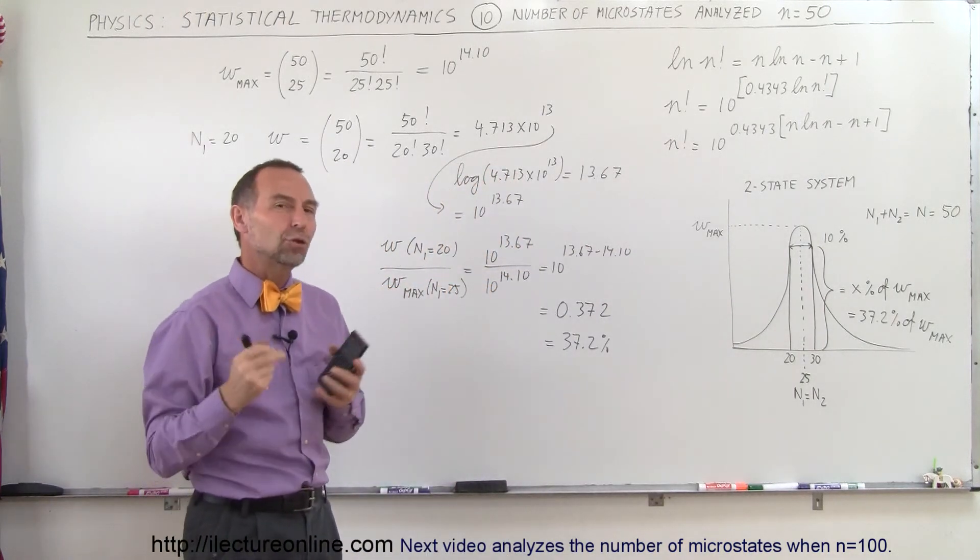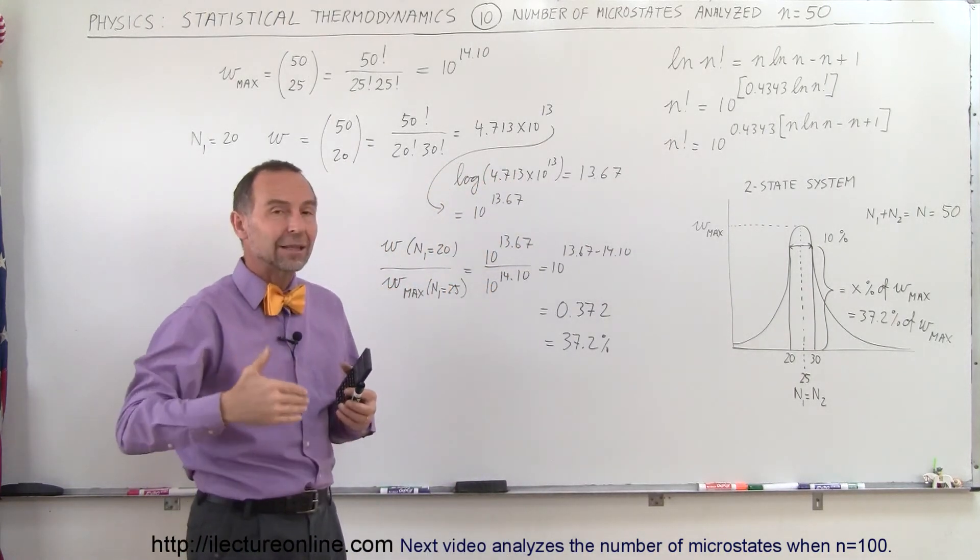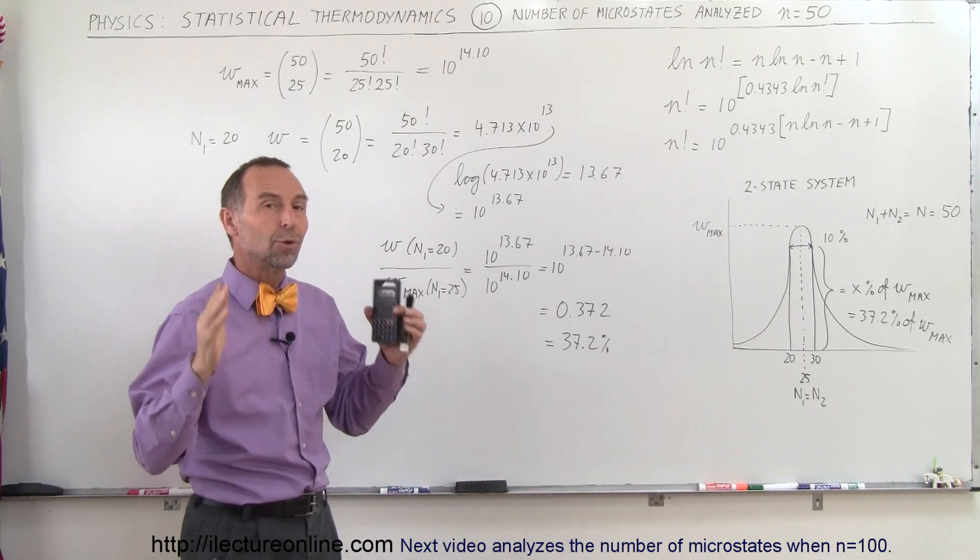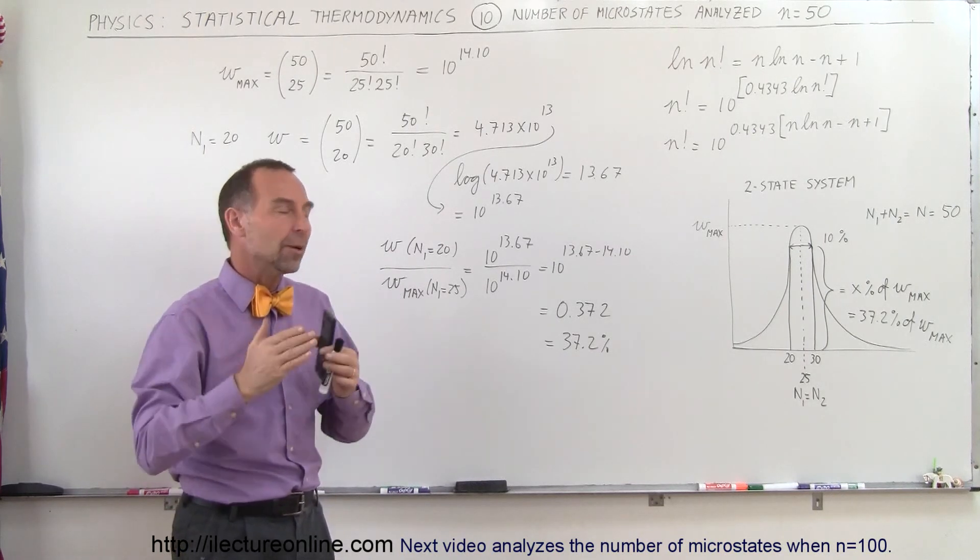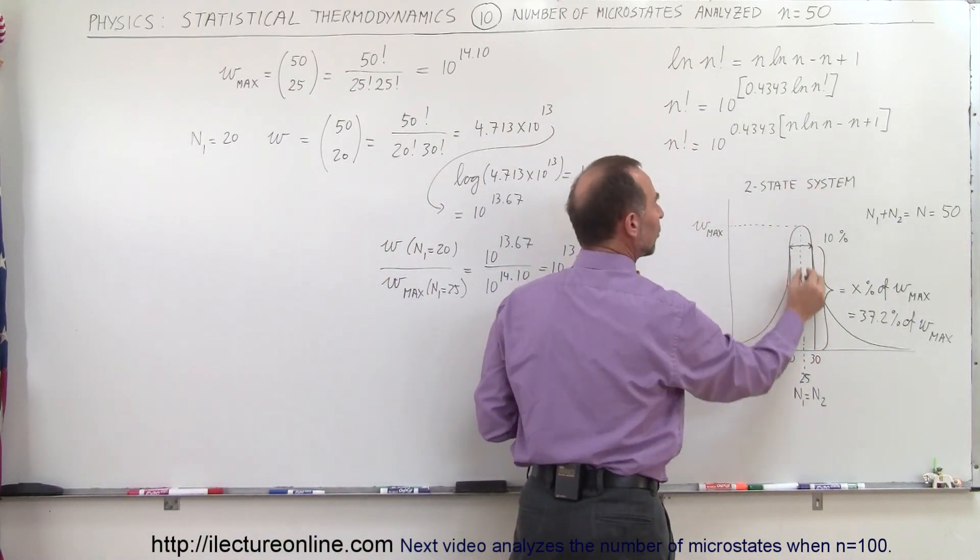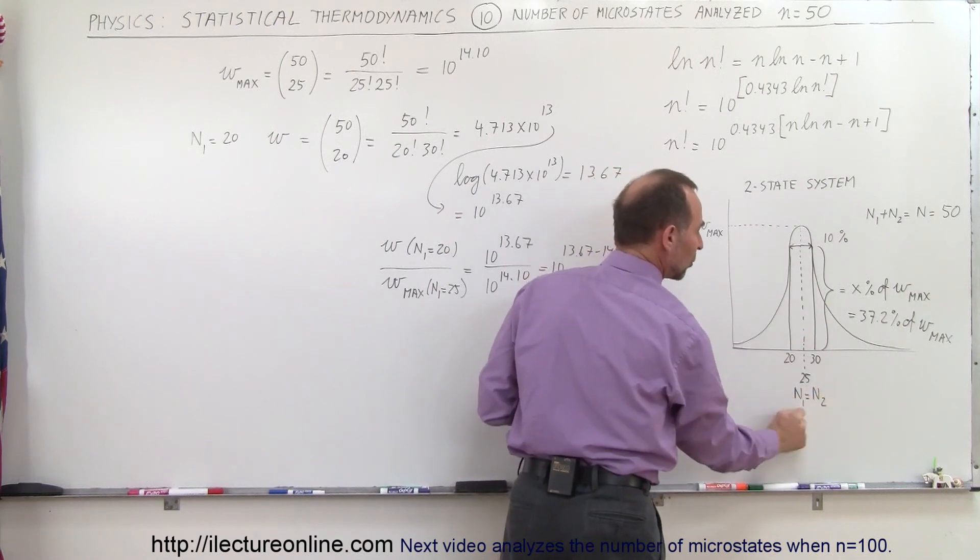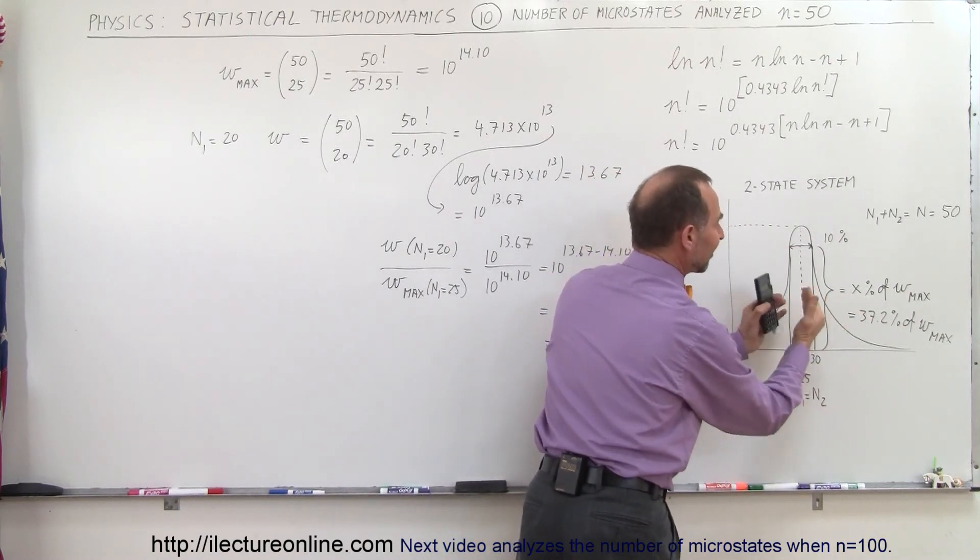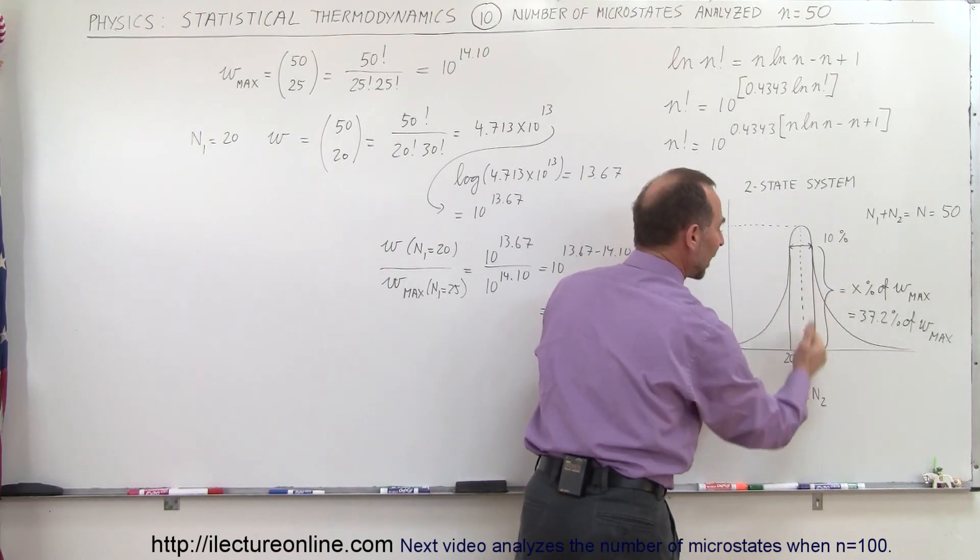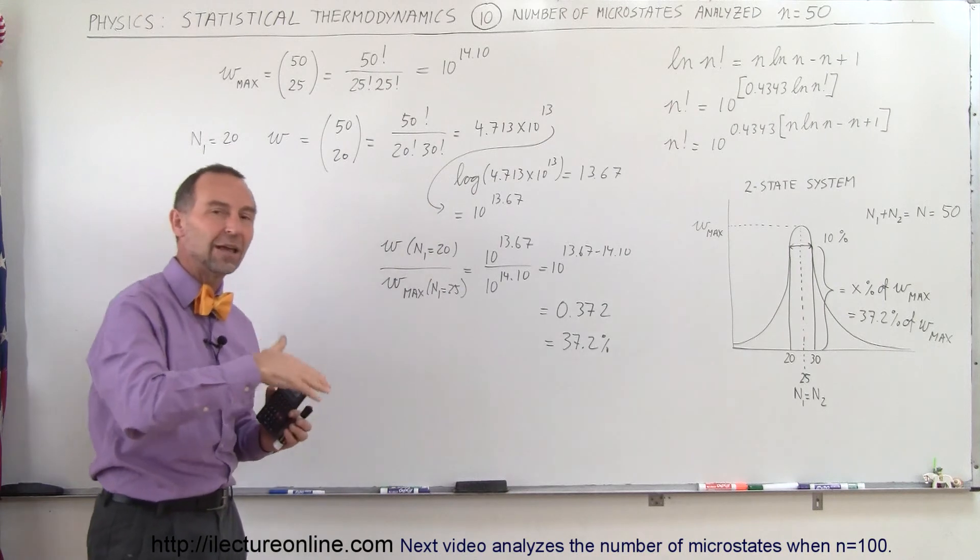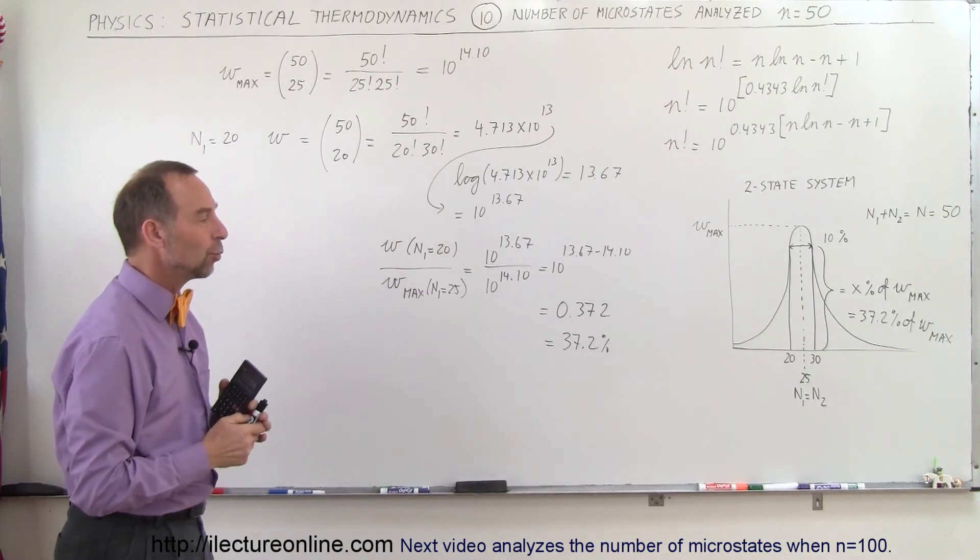Again, what that means in terms of thermodynamics is that the larger the number of objects in the population, the more likely that the state that you'll end up will be where N1 will equal N2. So the probability will grow that you'll be very close to this ratio, N1 equals N2, as the number gets big, and that there's less likely chance that you'll be away from that point where N1 equals N2, where the same number in one state and in the other state as well.